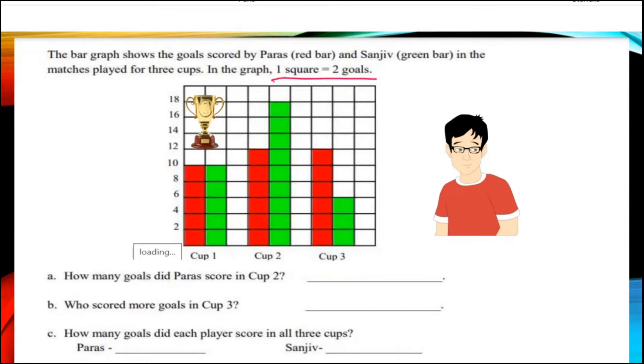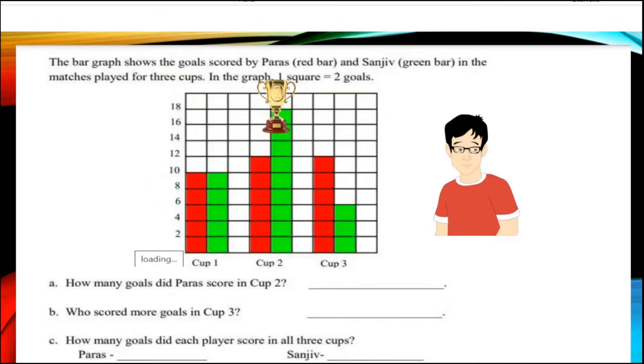Here they are telling us 1 square is equal to 2 goals. Like this 2 goals, 4 goals, 6 goals, 8 goals and 10 goals. This means for the first winning cup Paras wins 10 goals.